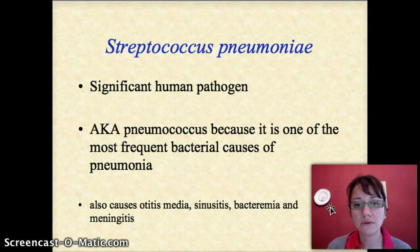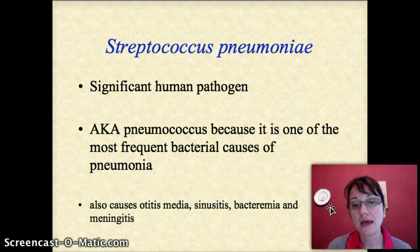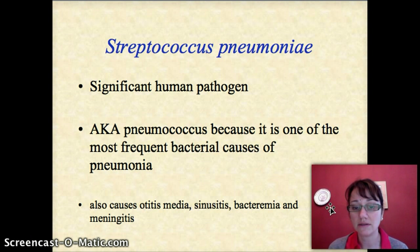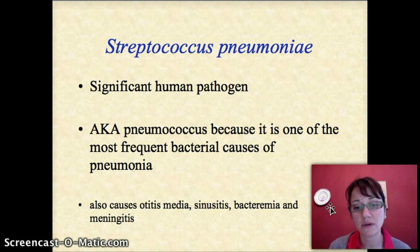Streptococcus pneumoniae is one of the most significant human pathogens, very commonly found in the nose and throat of many humans. It has a nickname of pneumococcus because it's one of the most frequent bacterial causes of pneumonia. But we also know that it can cause ear infections, especially in young kids — that's called otitis media — sinus infections in kids and adults, called sinusitis. And if it can escape from the lungs, ears, or sinuses, it can get into the bloodstream and cause bacteremia, and even seed distant sites like the meninges and cause meningitis.